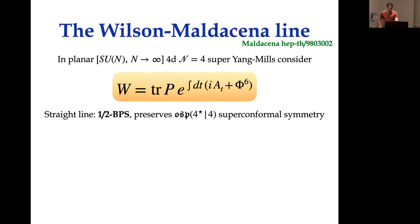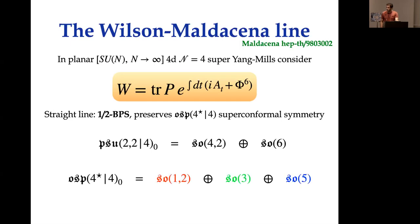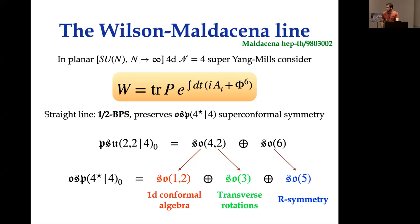In particular, it preserves a superconformal algebra OSP(4|4). The bosonic part of the super algebra of N=4 is PSU(2,2|4). The presence of a line breaks the conformal algebra SO(4,2) into SO(1,2), which plays the role of a conformal algebra in one dimension, and SO(3), which corresponds to transverse rotations around the line. Coupling one of the six scalars to the line also breaks the SO(6) R-symmetry to SO(5), which is an R-symmetry from the point of view of this 1DCFT.